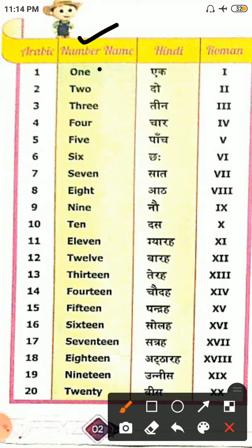One — one ki spelling kya hai? One 1, Two 2, Three 3, Four 4, Five 5, Six 6, Seven 7, Eight 8, Nine 9, Ten 10.